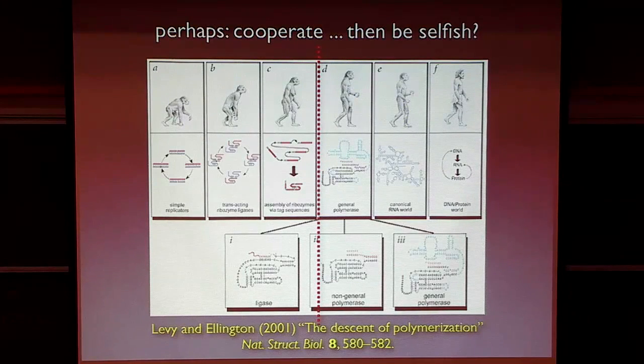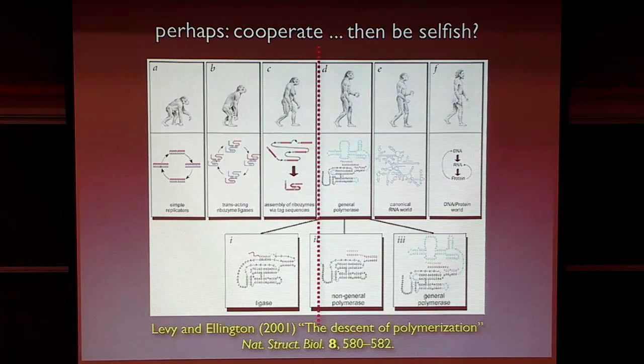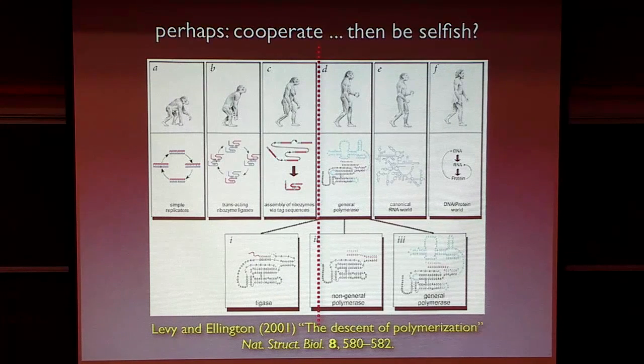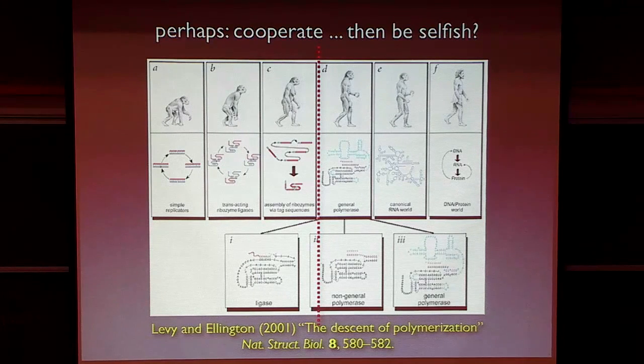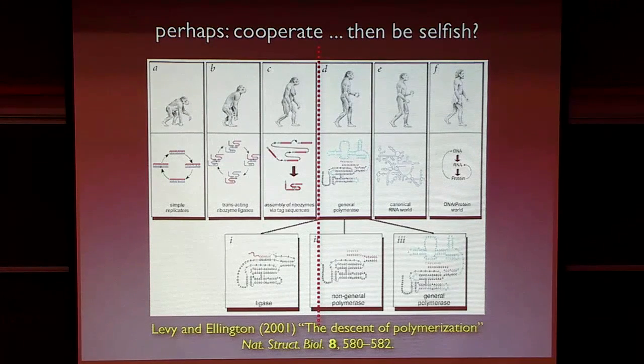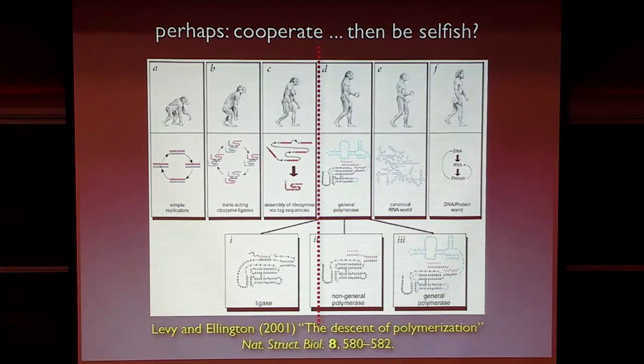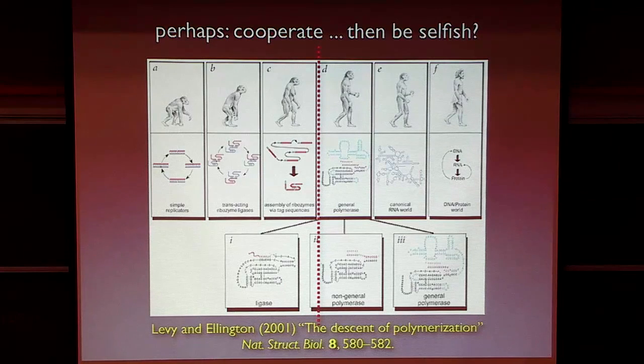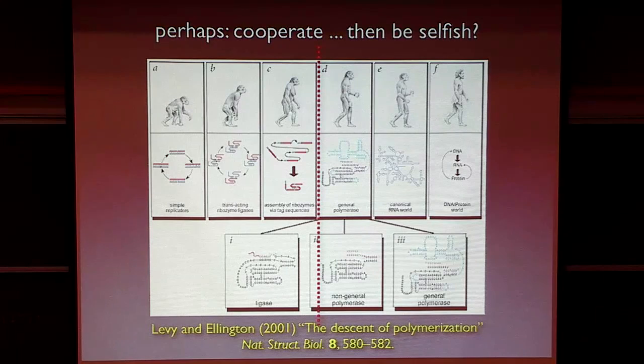Because the way I think about this transition or this origin of selfishness and cooperation, I got a lot of inspiration from one of my favorite figures that I've ever seen, ever published. And this was a figure that was published by Andy Ellington in 2001. This was a news and views that accompanied the description of this original replicase ribozyme.